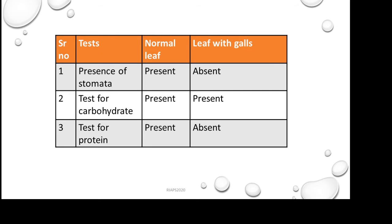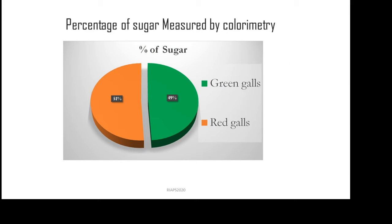We performed the colorimetric test for quantitative measurement of carbohydrate. For that, we divided the leaf containing GALs into two parts: the green GALs and the red GALs. Before that, we also observed the presence of stomata and found that the leaf containing GALs are stomata-absent. In the green GALs and the red GALs, a high percentage of sugar — about 49% and 51% — is present in the GAL-containing leaves, which is higher than the normal leaf.